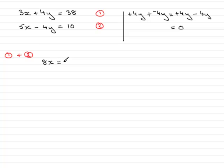That's going to equal, because we know the y terms get eliminated as we saw over here, we just have 38 plus 10 which is 48. So if I divide both sides by 8, we have 8x divided by 8 is x and 48 divided by 8 is 6, so x equals 6.